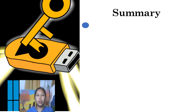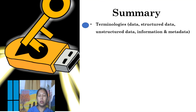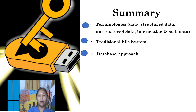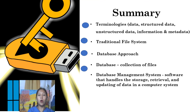To summarize our lecture, we need to understand the key ideas. We have the database system and the approach to database management. We have these terminologies: data, structured data, unstructured data, information, and metadata. We also have the traditional file system and how it affects the technology we are using now. That is the reason why we have the database approach, which is used to eliminate all the drawbacks of the file-based approach. And then we also have the database, which are the collections of files, and the database management system as a software that handles the storage, retrieval, and updating of data in the computer system.